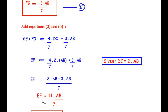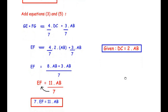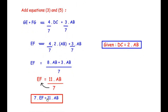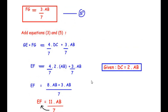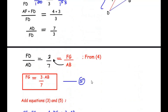Taking 7 to the other side, we get 7 times EF equals 11 times AB. This is what we had to prove, hence proved. This is how you divide the trapezium into two triangles, prove the triangles are similar, and then using the basic proportionality theorem and proportional sides, prove that 7 times EF equals 11 times AB.